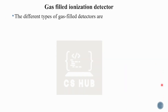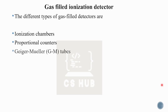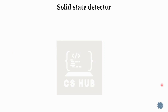There are different types of gas-filled ionization detectors: the ionization chamber, the proportional counter, and the Geiger-Müller tube.